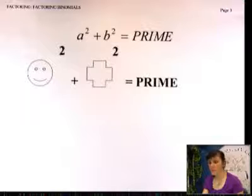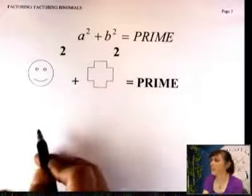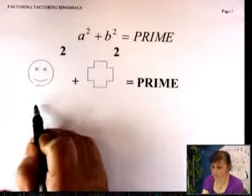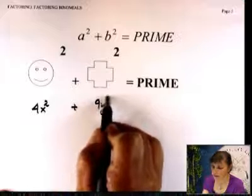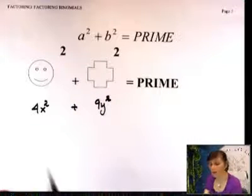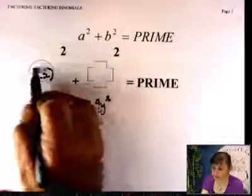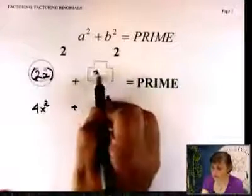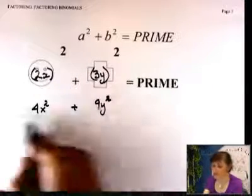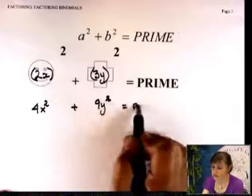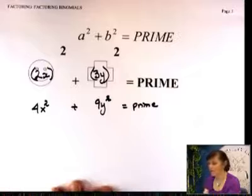Let's do one that's a little bit disguised. For example, 4x squared plus 9y squared — that doesn't look that easy. But I can write 4x squared as (2x) squared plus (3y) squared. That's also prime. So when you see something like this, you can write prime. Sum of two squares is prime — do not factor them.